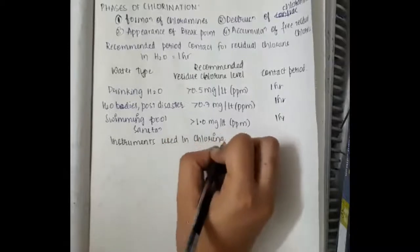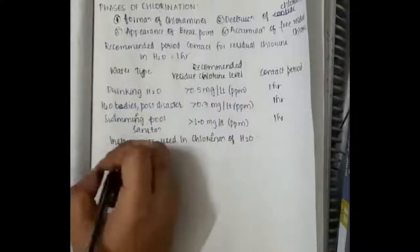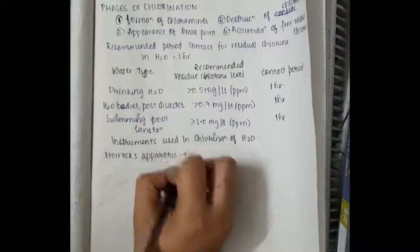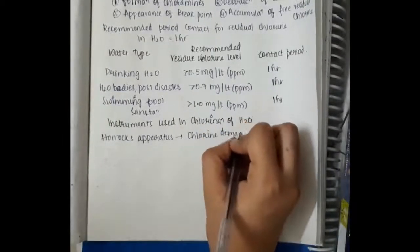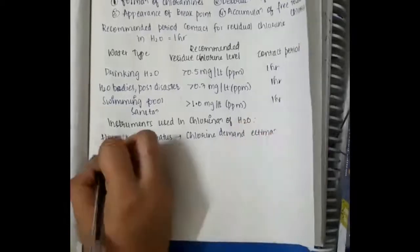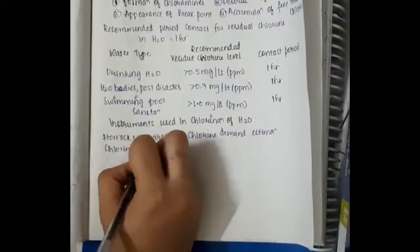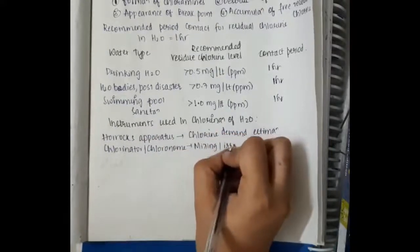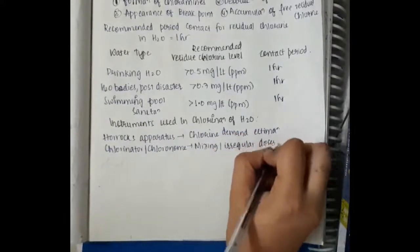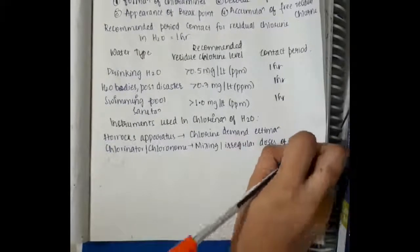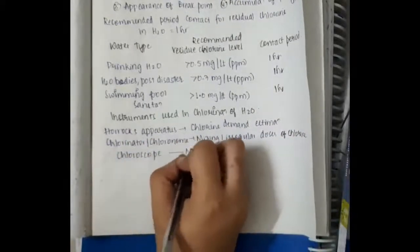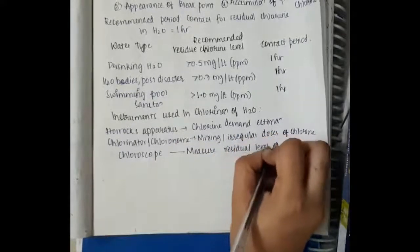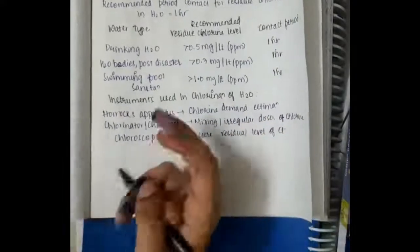The instruments used in chlorination of water are: first, the Horrox apparatus, which is used for chlorine demand estimation; second, the chlorinator or chloronom, which is used for mixing or metering irregular doses of chlorine required for disinfection; and third, the chloroscope, which is the instrument that measures the residual level of chlorine.